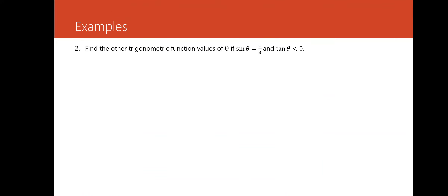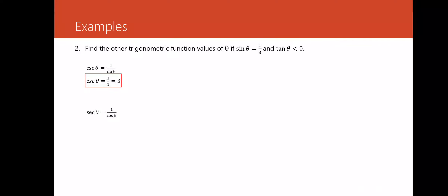For the next example, we will find the other trigonometric function values of θ given that sine θ equals 1/3 and tangent θ is less than zero. Using the reciprocal identity, cosecant θ equals 1 over sine θ, which is the reciprocal of 1/3, so cosecant θ equals 3.